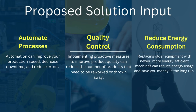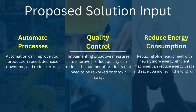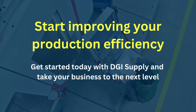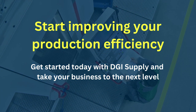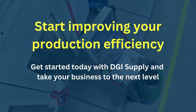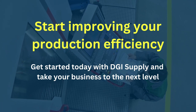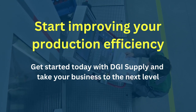Reduce Energy Consumption. Replacing older equipment with newer, more energy-efficient machines can reduce energy usage and save you money in the long run. Start improving your production efficiency. Get started today by trying the DGI Supply OEE Calculator and take your business to the next level.